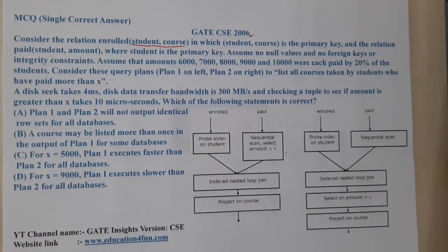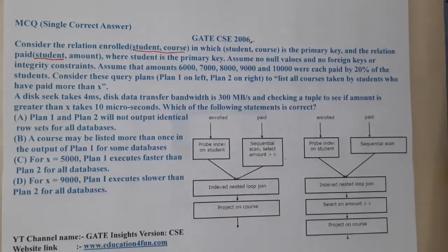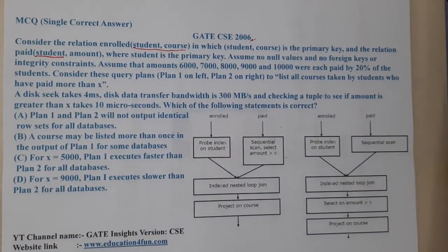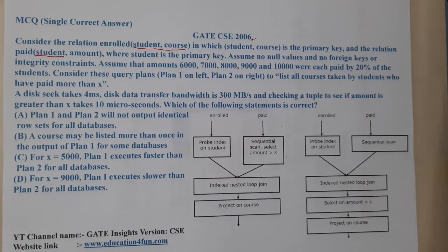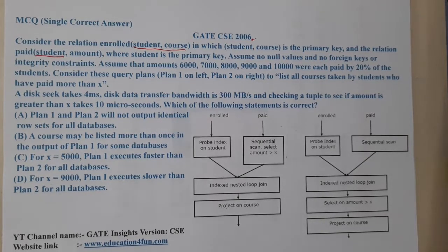And the relation paid(student, amount), where student is the primary key. Assume no null values and no foreign key or integrity constraints in these two tables. Amounts of 6000, 7000, 8000, 9000, and 10000 were each paid by 20% of the students.